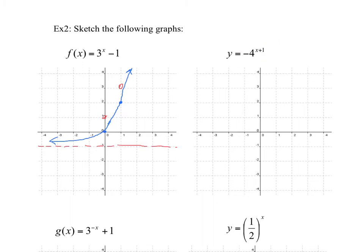The next one has base 4. The base function passes through (0, 1) and (1, 4). The negative sign out front means this is a reflection over the x-axis, so this curve flips to become its mirror image. The first transformation is to flip those points.